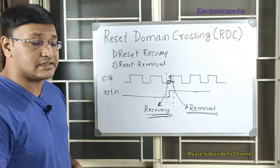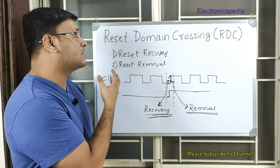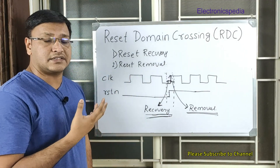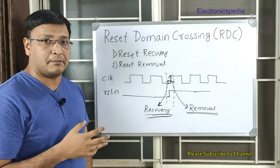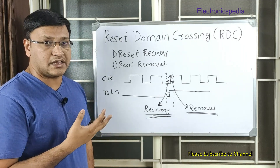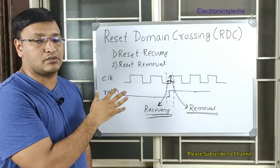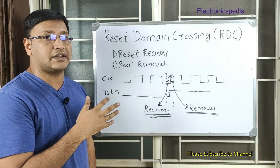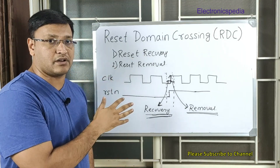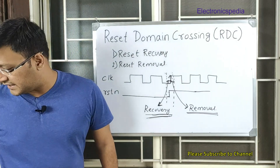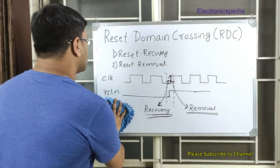Now let me explain reset domain crossing. Reset domain crossing is similar to clock domain crossing, but instead of checking data crossing from one clock domain to another, here we check for signals crossing from one reset domain to another reset domain. Let me draw that and explain what reset domain crossing exactly is.